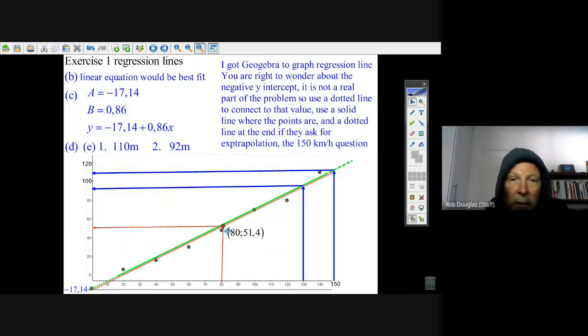Another thing you could do is find the mean of the x's and the mean of the y's. That's 80 and 51.4, and graph that point. When you put your regression line in, it's probably a good idea just to put the line near where the points are.